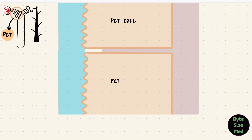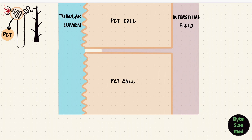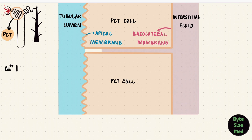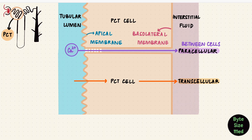Here we have a cell of the proximal tubule. This would be the tubular lumen with the tubular fluid from where we're going to be reabsorbing calcium, and here we have blood in capillaries where that calcium is going to go. Between the cell and the capillary is the interstitial fluid. This would be the apical membrane and this is the basolateral membrane. In the proximal convoluted tubule, calcium reabsorption is coupled with sodium and water. Most of the reabsorption happens paracellularly. There are two ways calcium gets reabsorbed: the paracellular path and the transcellular path. The paracellular pathway is between the cells and moves in along with water. A smaller portion is transcellular.